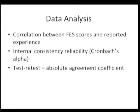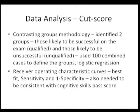We correlated FES scores with experience, looked at the internal consistency between the task items, and also did test-retest, where a subset of participants took the test again. Contrasting groups methodology — a type of statistical analysis used to decide the PASS score — defined qualified candidates as those who had performed at least 100 combined upper and lower endoscopies. The receiver operating curve characteristics, similar to what was used with FLS, was the statistical method used to determine the cut score.